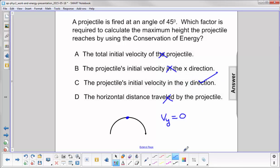So what we want here is C, the projectile's initial velocity in the y direction.